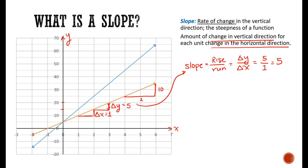Let's do this with the blue line. Here, for a unit increase in x, we would have a change in y from 35 to 45 — that's a change of 10. So in this case, our slope is going to be equal to that change in y over the change in x. For every unit increase in x, y is going up by 10. The orange line has a slope of 5 and the blue line has a slope of 10.